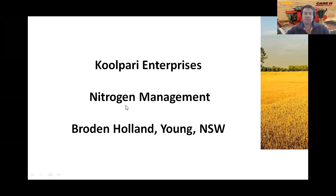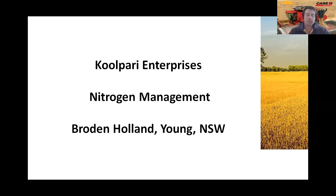Hi everybody. About four and a half thousand hectares at Young — wheat, canola, a little bit of barley. We were doing no variable rate applications before 2016. Then in 2016 we started doing 2-hectare grid mapping for pH and P, and also bought a grain analyzer for a header. We really bought it for the sole purpose of blending but soon quickly realized we could use it for our nitrogen management.